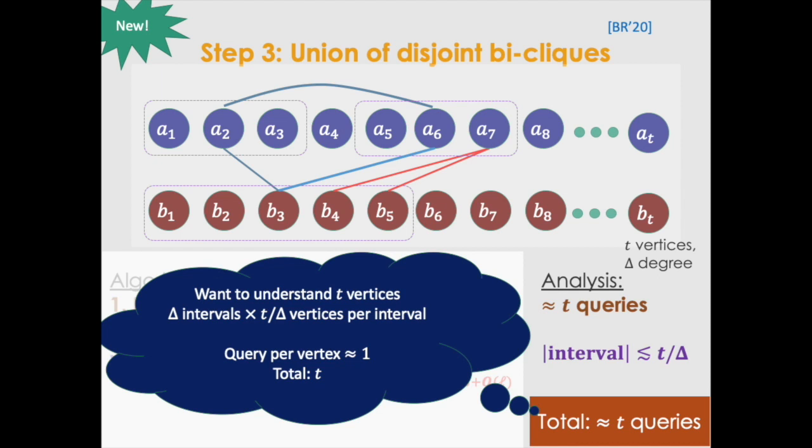But we have, because the degree is delta, we've learned essentially delta intervals. So if we put these together, delta intervals and t times delta vertices per interval, we essentially get a query time per vertex of one. So about t total queries.